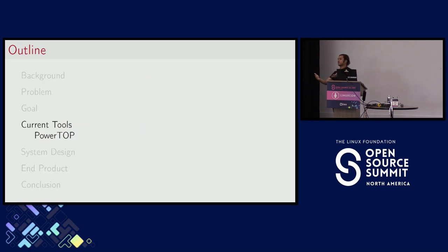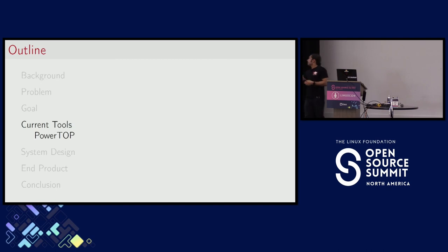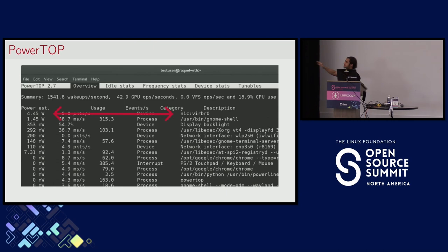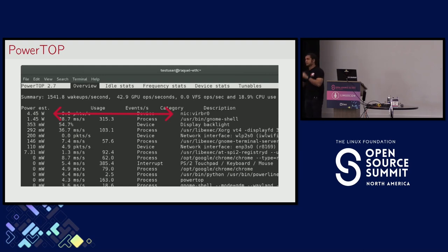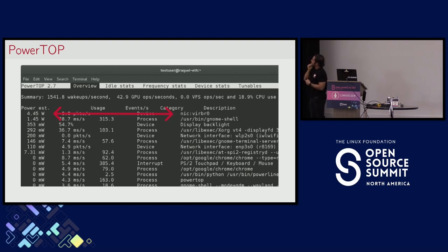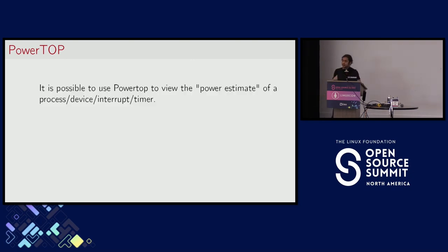Now we come back to that great answer: PowerTop. If energy consumption is such an old and useful problem, why has no one solved it? It turns out people have looked at it before. PowerTop is a tool from Intel that tries to give you the power estimate of a particular process, device, timer, or interrupt. On the screen you see a screenshot from a runtime instance of PowerTop. The leftmost column shows the power estimate value, and the rightmost column shows the description of the entity to which that value is assigned. In this case, we can see the GNOME shell is consuming 1.45 watts.